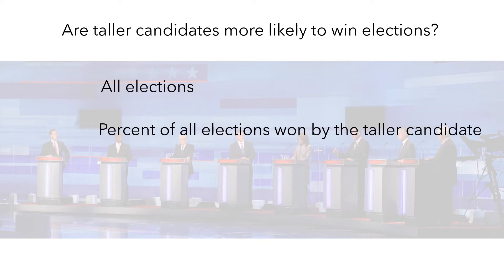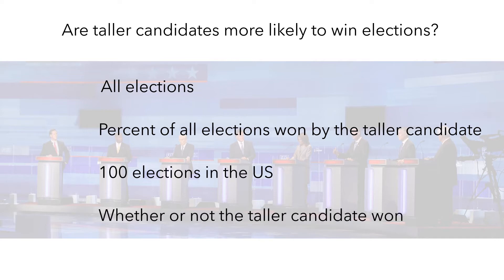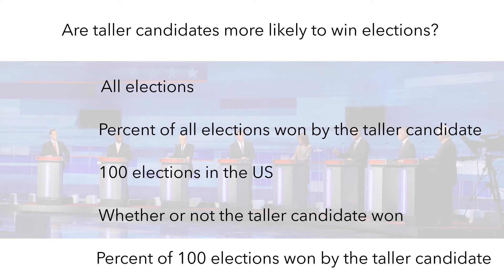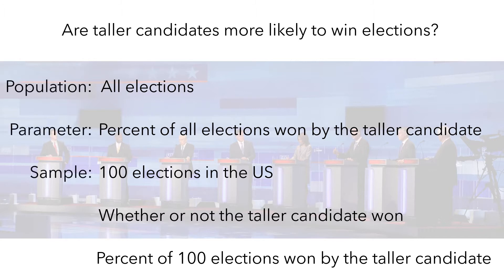Now, candidates for political offices usually don't submit their vital statistics, so we don't have a list of the heights of all the political candidates. So we'd need to look at a subset of the elections, say 100 elections in the United States, and in each election would record whether or not the taller candidate won, and then compute the percent of the 100 elections that were won by the taller candidate. These decisions provide structure to the investigation of the research question, and they each have a name: the population, parameter, sample, variable, and statistic.